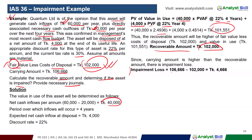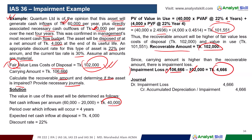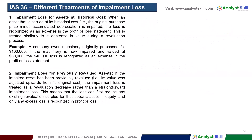For the impairment loss, it is the carrying amount less the recoverable amount. The journal entry is: debit impairment loss, credit accumulated impairment. If treated under historical cost, the journal is: debit impairment loss, credit accumulated impairment.